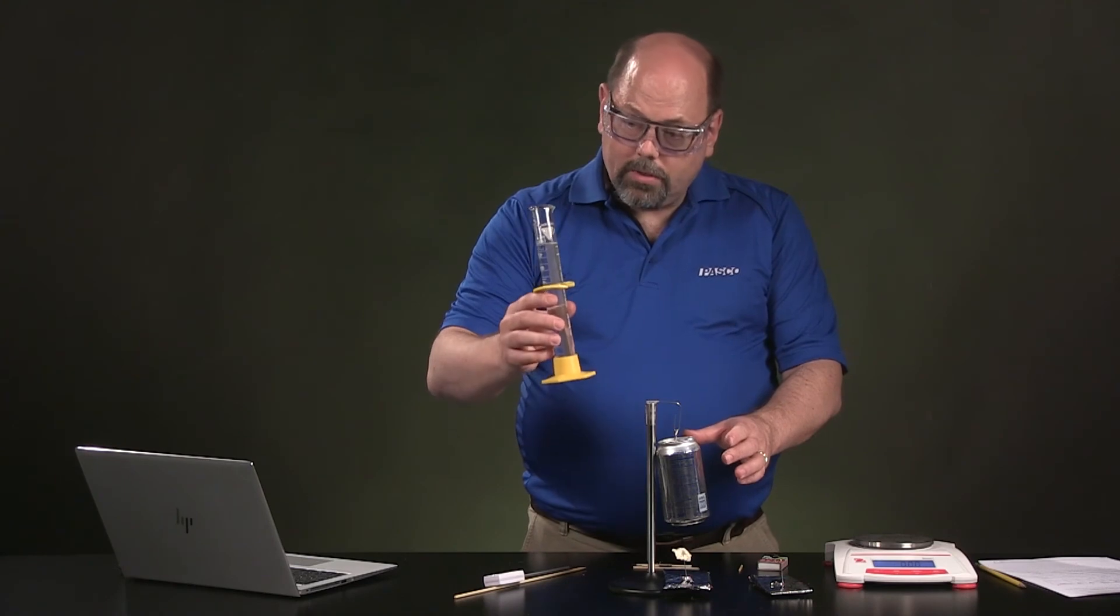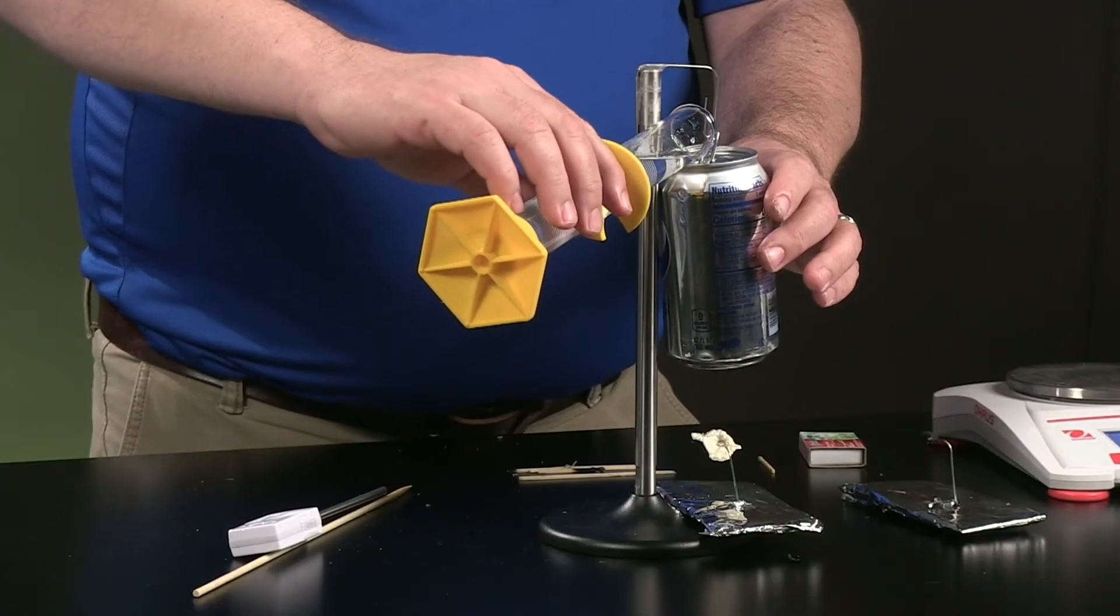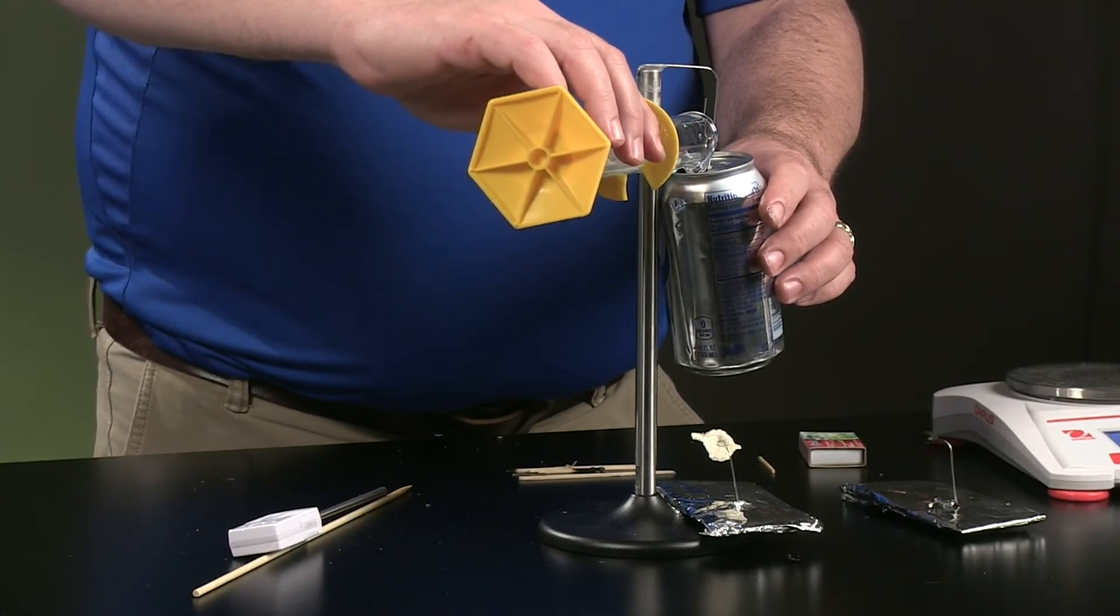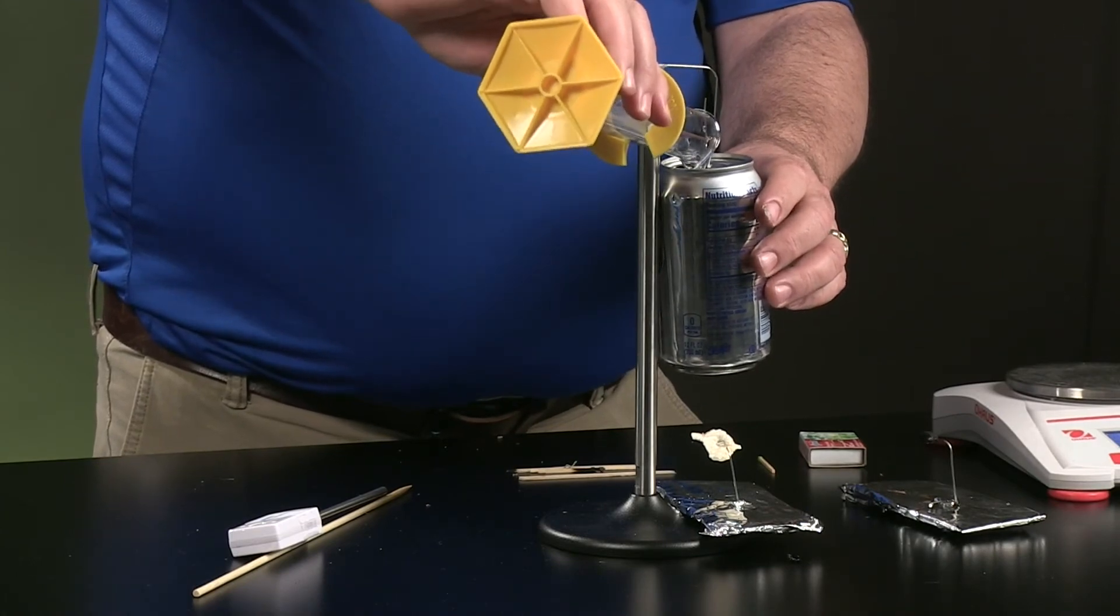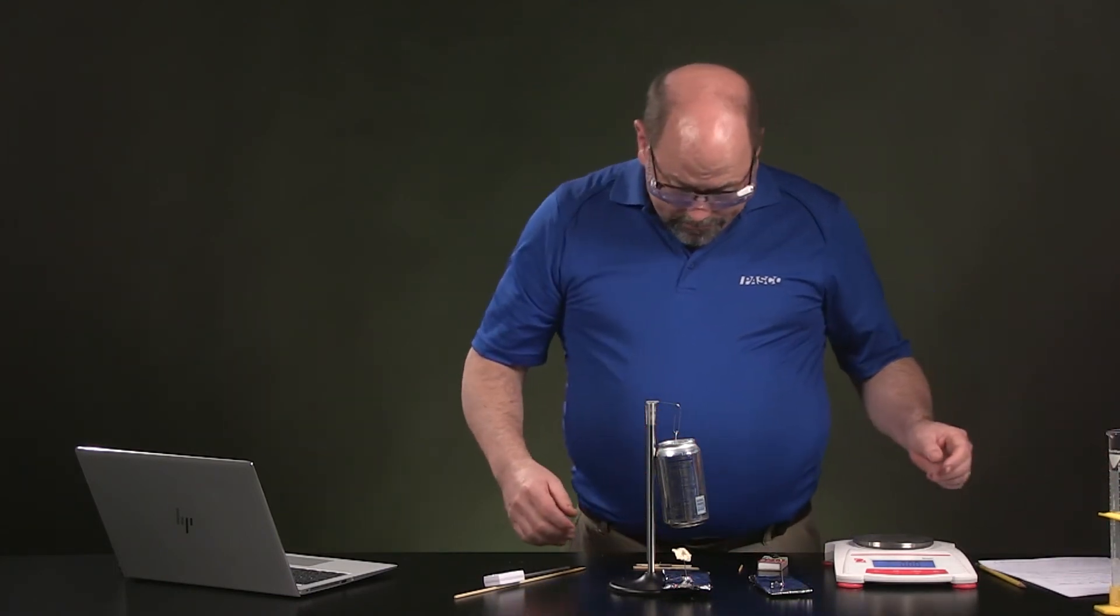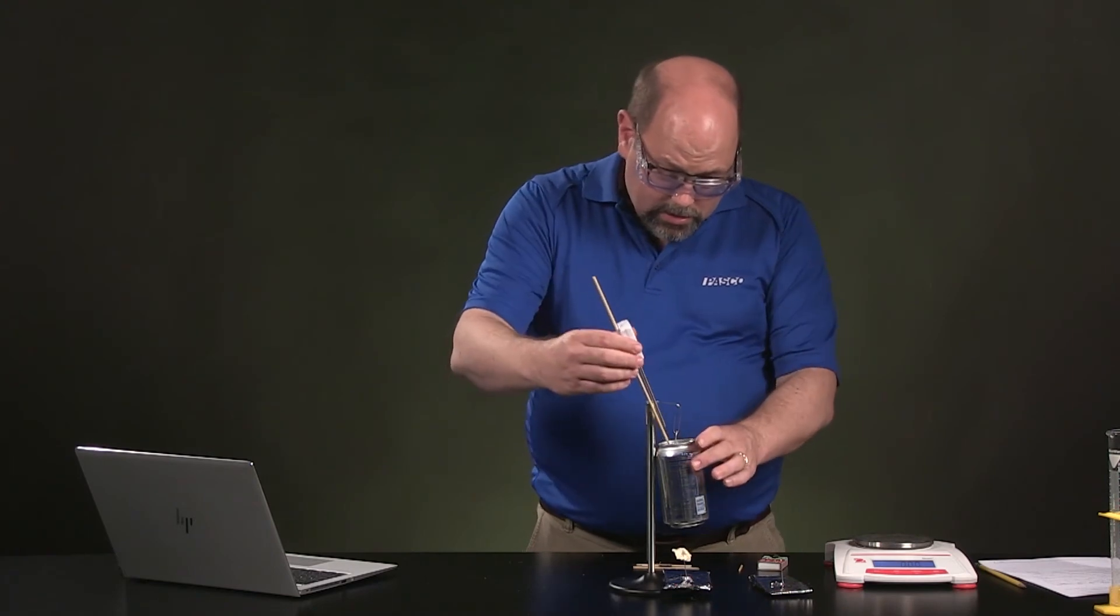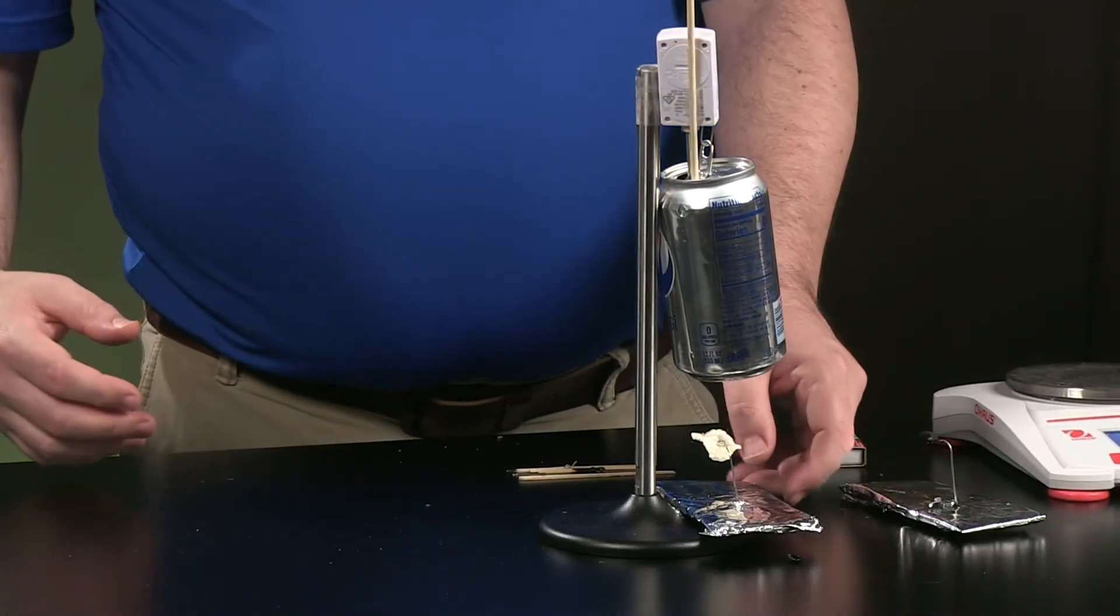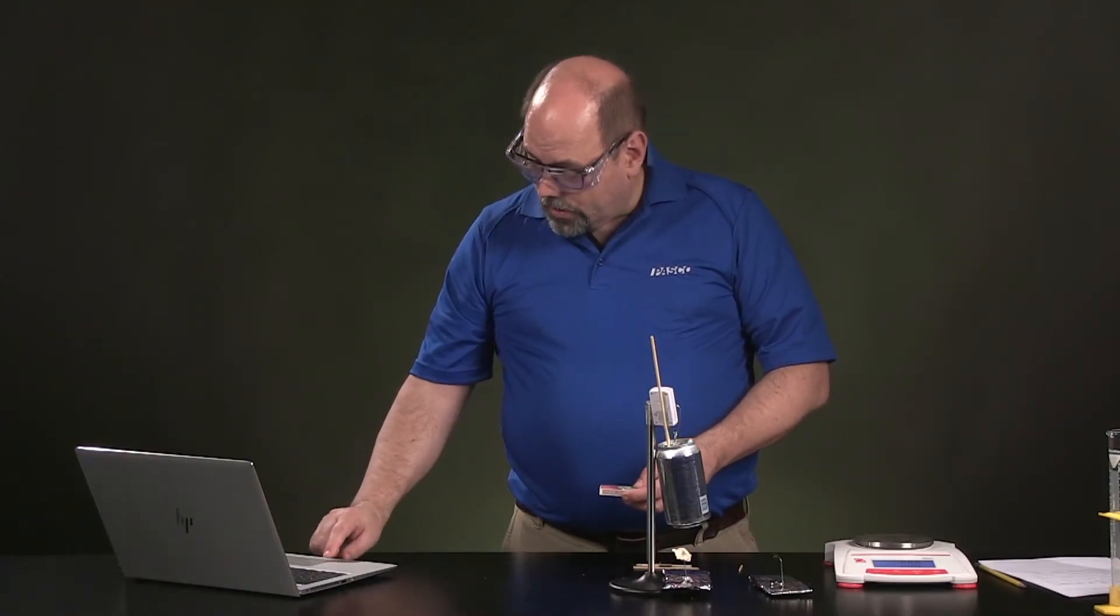Now we're going to pour a new 100 ml water sample into our calorimeter. And if you're just doing this and you have two cans, that would be another way you could do that pretty quickly. Let's put our thermometer back in. Make sure the marshmallow is right underneath. I'm going to go ahead and start a second run.